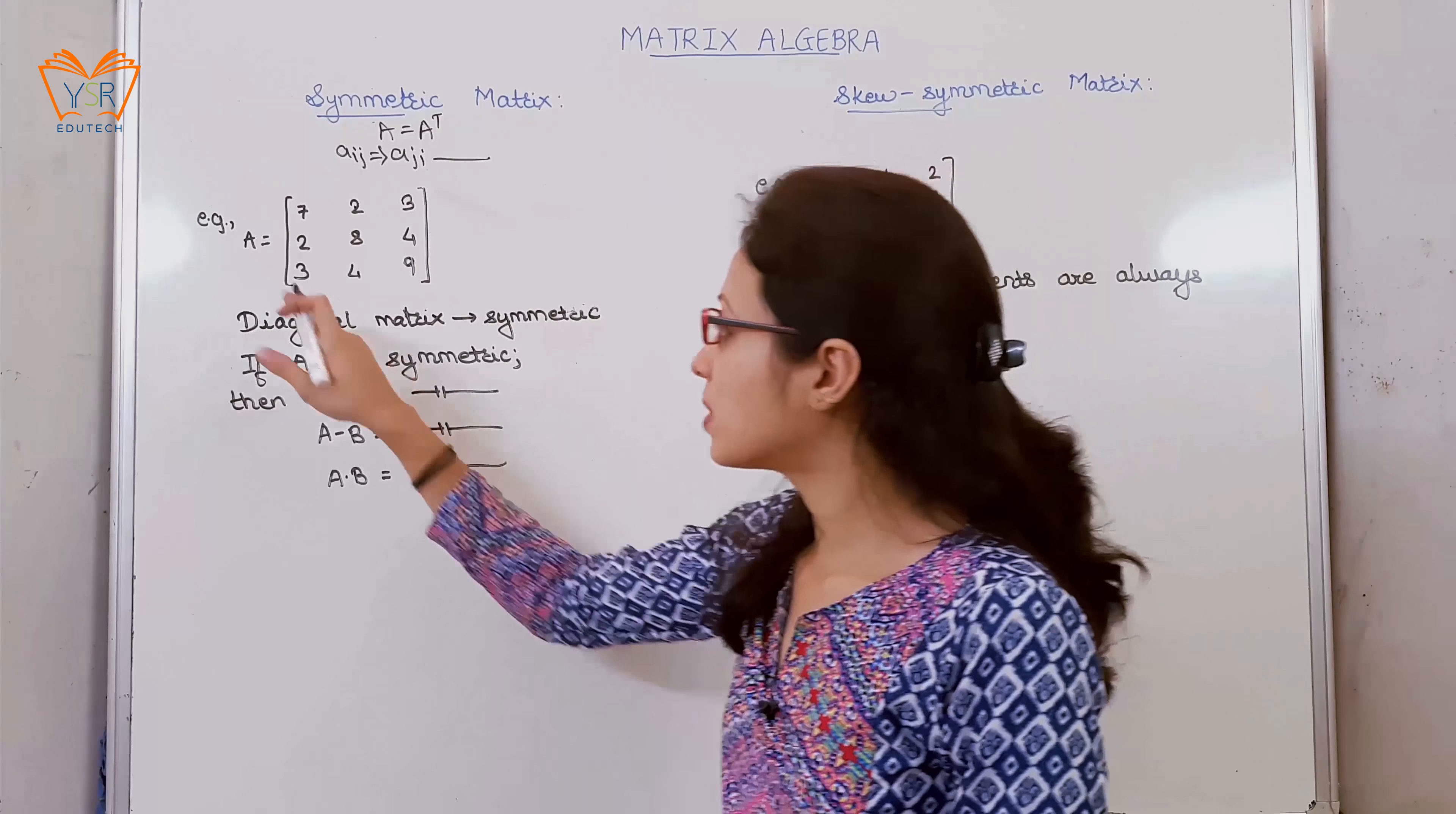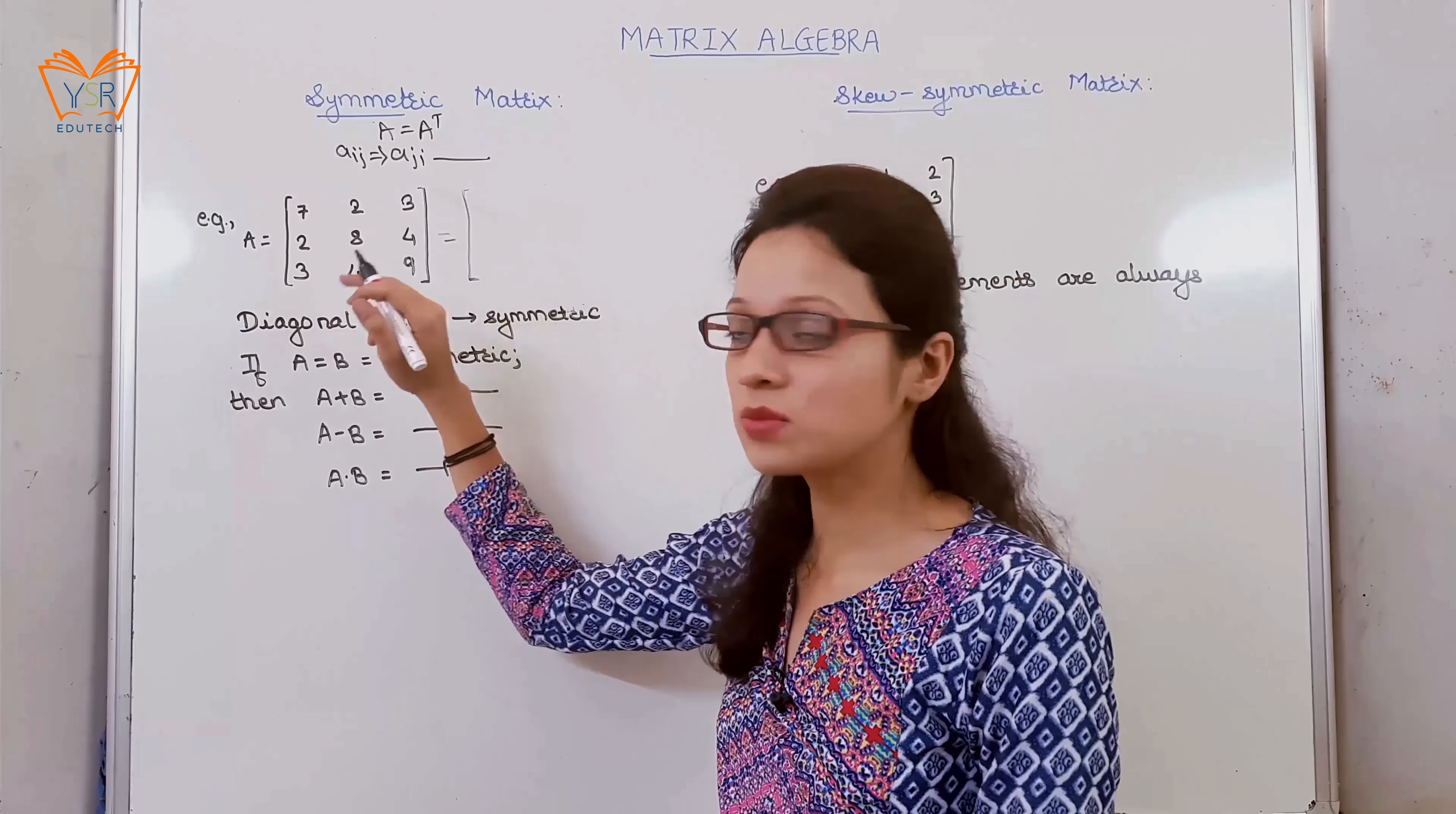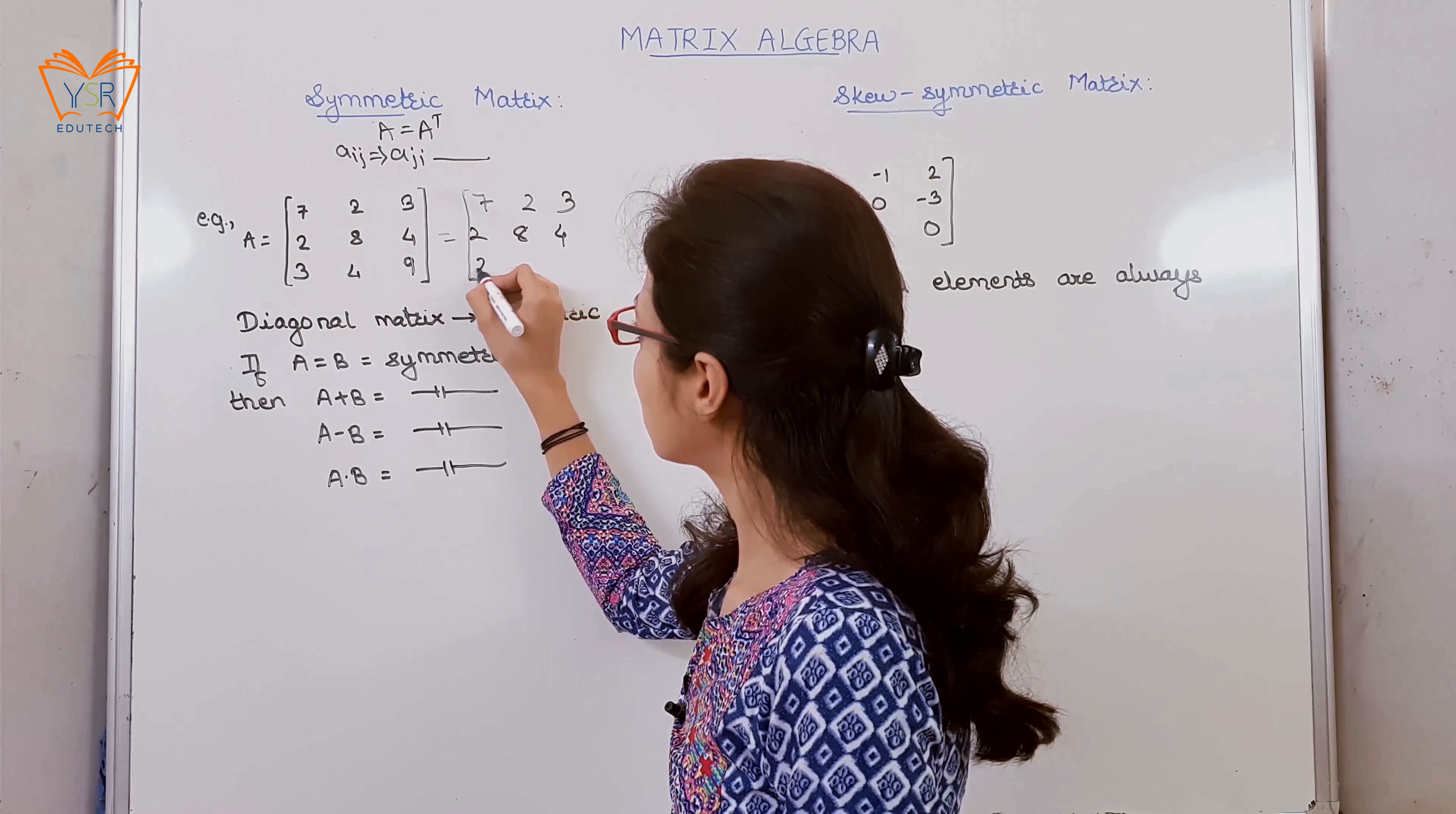Consider one example: A is equal to a 3 by 3 matrix. We will simply find out the transpose. We know how to find out the transpose: only interchange rows into columns or columns into rows. So first column written as first row, second column as second row, and third column as third row.